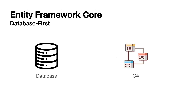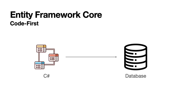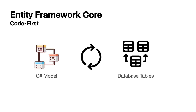You can work with EF Core in two ways. You generate a model from an existing database — this approach is called database first. Or you encode a model, then use migrations to create a database — this approach is called code first. With the code first approach, there is a challenge to keep the database schema up to date with the current state of the model. Migrations will help with that.